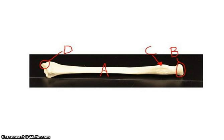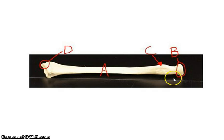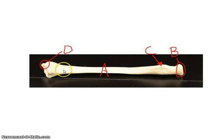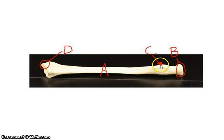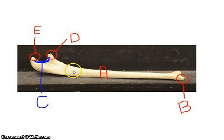Next we go to the forearm. The radius is on the lateral side of the lower arm — the thumb side — and it's important you know that. Parts of the radius include the head of the radius, the radial tuberosity, and a little pointy part at the end called the styloid process.